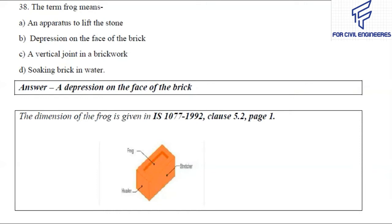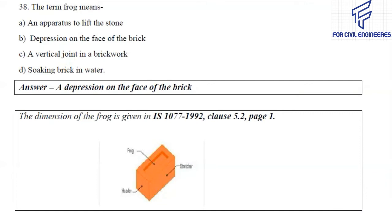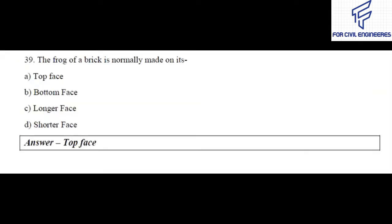Question number 38: The term 'frog' means — an apparatus to lick the stone, a depression on the face of the brick, a vertical joint in brickwork, or soaking brick in water? The right answer is a depression on the face of the brick. Frog is a depression made on the top surface of a brick, as you can see in the image. The purpose of providing frog is to form a key for holding the mortar and to work as a shear key. The dimension of the frog is given in IS 1077:1992 clause 5.2.